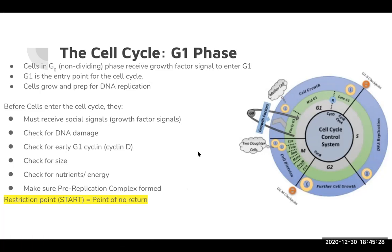Essentially, the restriction point is your point of no return. When the cell has passed the restriction point, there's no going back. The cell can pause momentarily — so once it's past the point of no return and realizes something is going wrong, like the DNA isn't right or there aren't enough nutrients, it can pause. But it cannot go back entirely to G0. If it pauses for too long, it will most likely go into programmed cell death, because if the cell cycle is delayed for a long time, something horrible has probably happened.